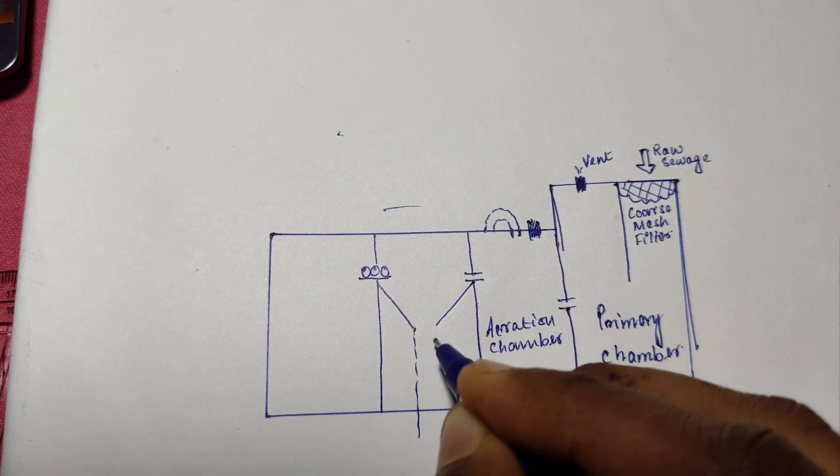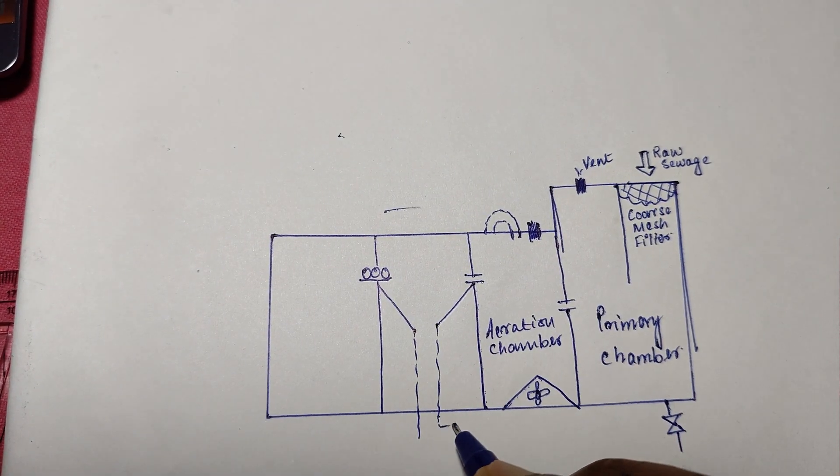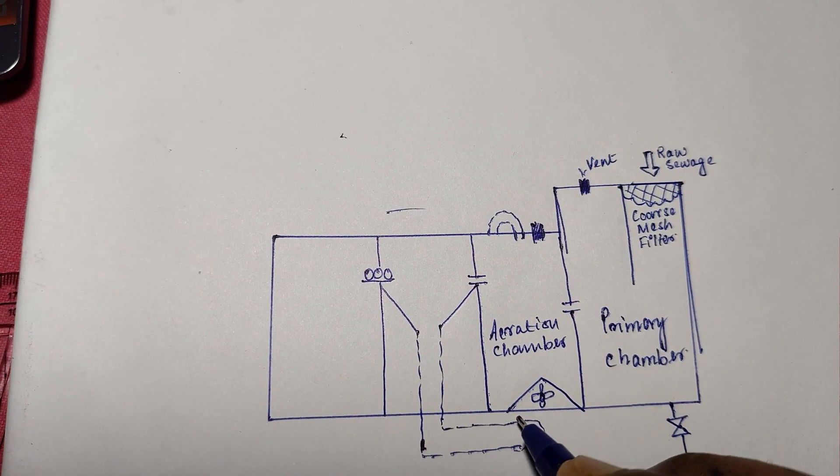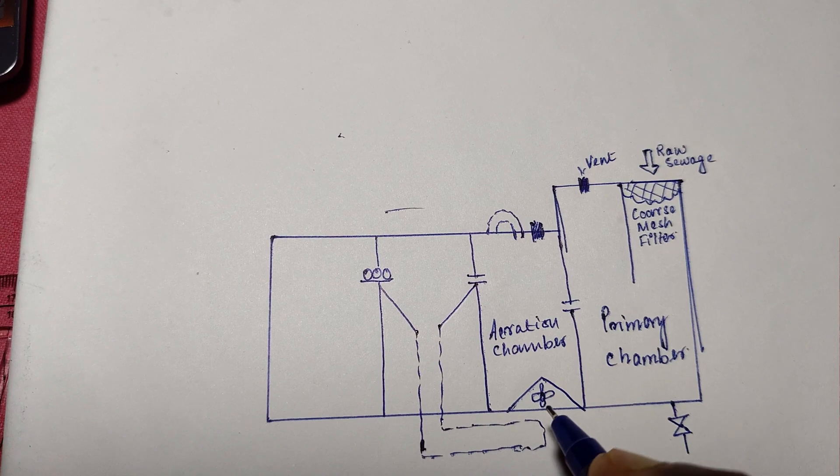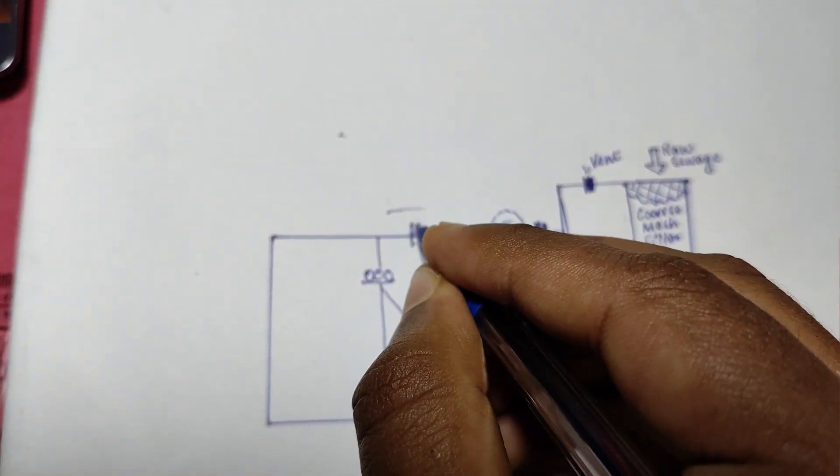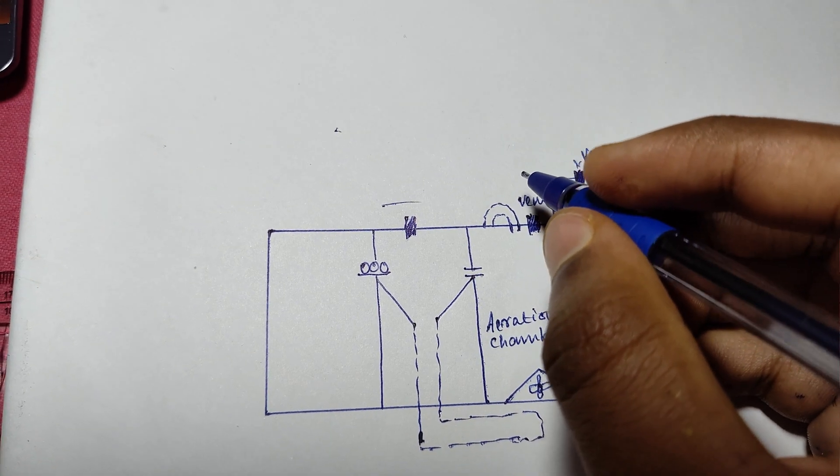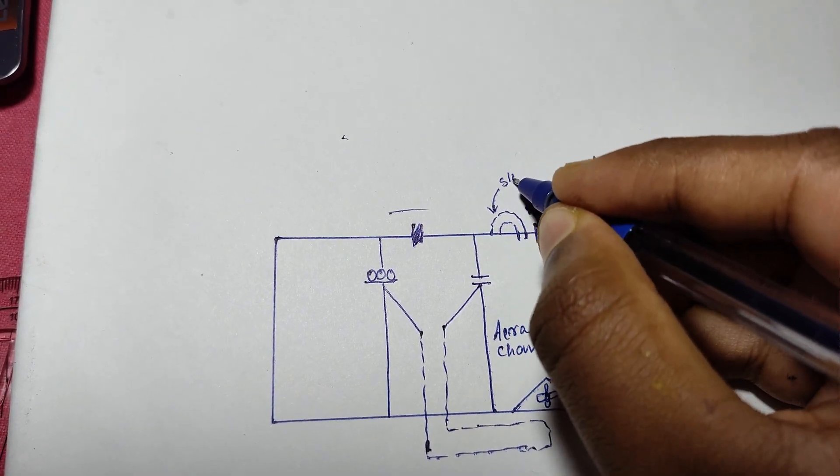here, decomposing into carbon dioxide, water, and other inorganic bits. Then we have the settling chamber. This is where the sludge settles down. The sewage flows into this compartment and gravity does its work - the solids settle out gracefully